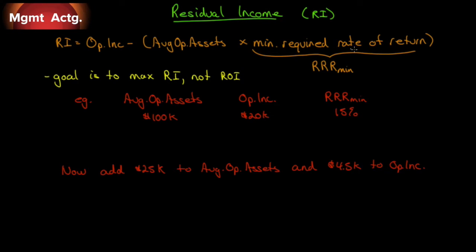Residual income is our operating income minus our average operating assets times the minimum required rate of return. So if we require a 10% minimum return on any investment in assets, we take average operating assets times 10%, and our operating income should be at least that. If residual income is zero, that means economic profit is zero — we're in a perfectly competitive industry.